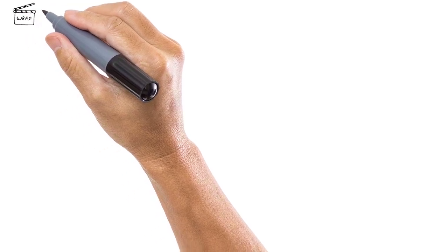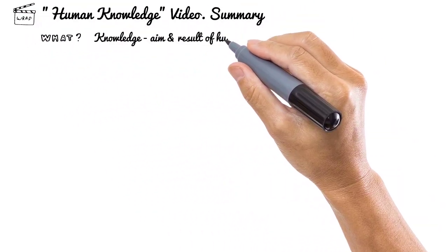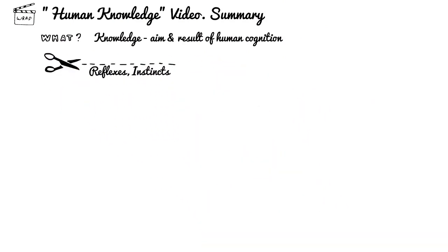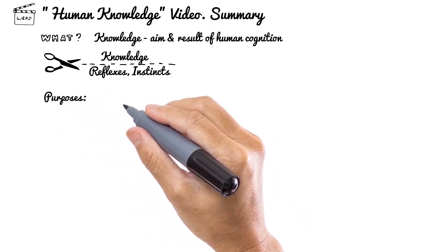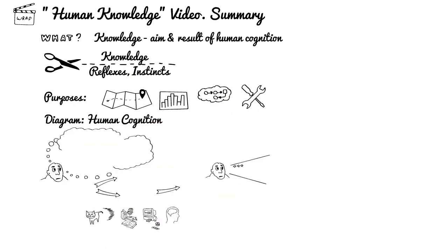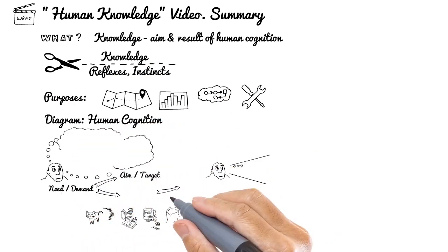We have just finished fourth video, Human Knowledge, when we try to discuss what human knowledge is, where reflexes and instincts are no longer could help and only knowledge can help further. What are the purposes of gaining knowledge in general? And we finished with simplified diagram and example. It's very oversimplified view but necessary for us to continue further discussions.